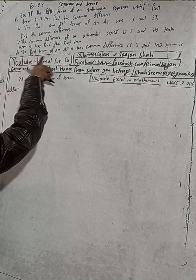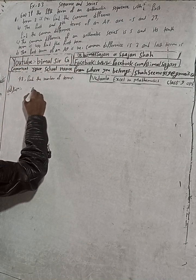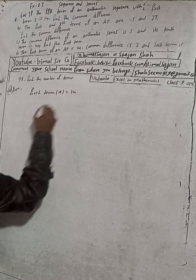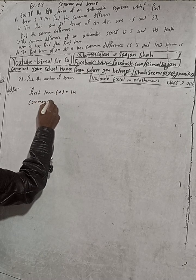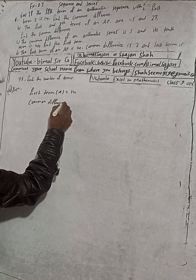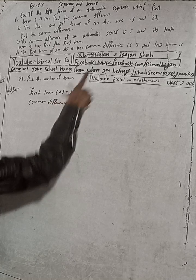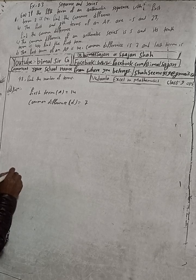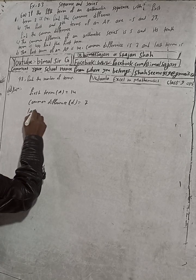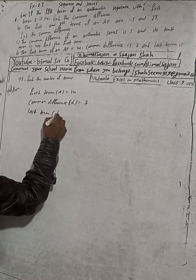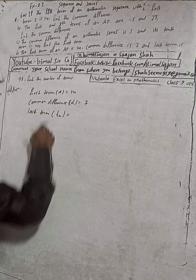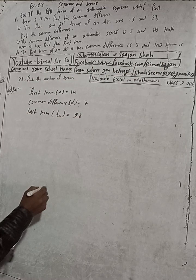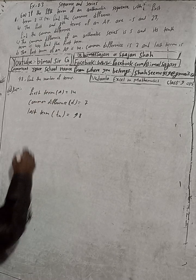Now for Part 6D: The first term of an AP is a = 14, the common difference D = 7, and the last term is 98. We need to find the number of terms.